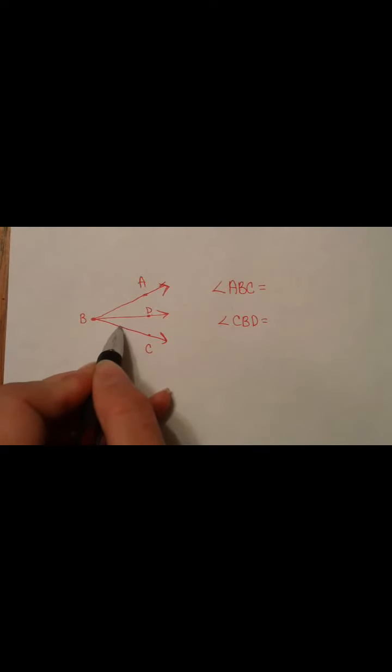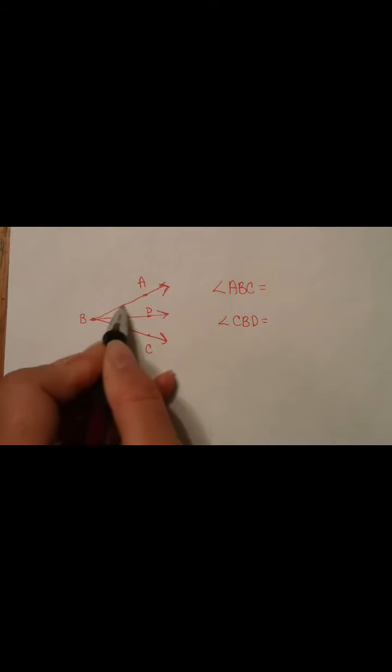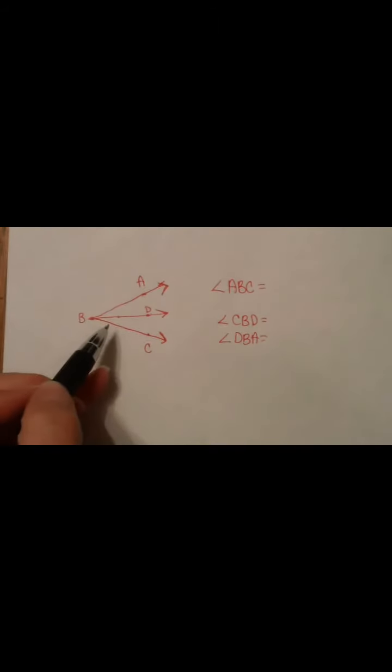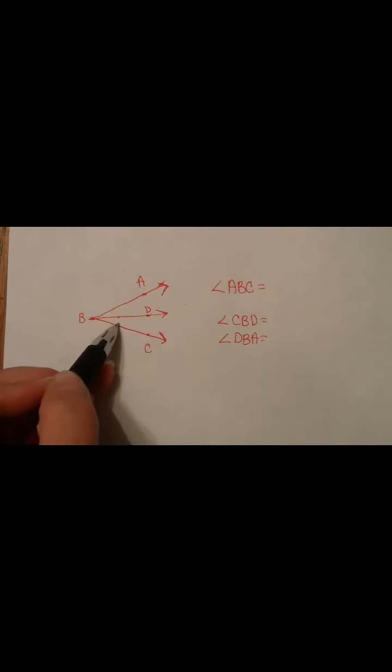And then, that makes up this part of the big angle. And then, this other part of it is Angle DBA. Now, as you might imagine, this angle plus this angle equals the whole angle, just like the Segment Addition Postulate.